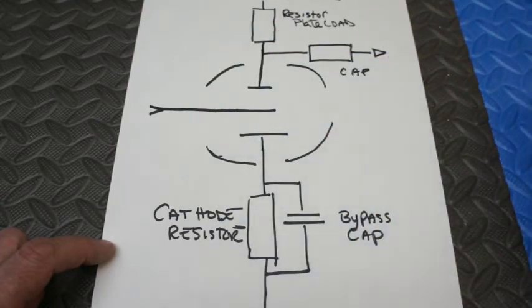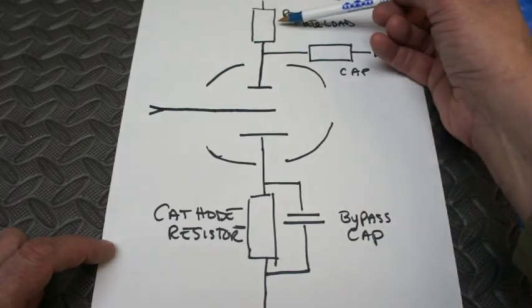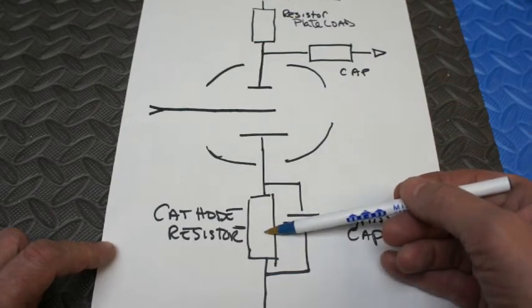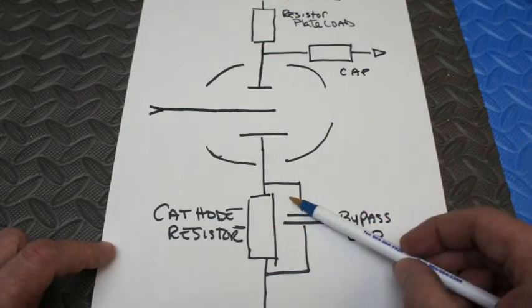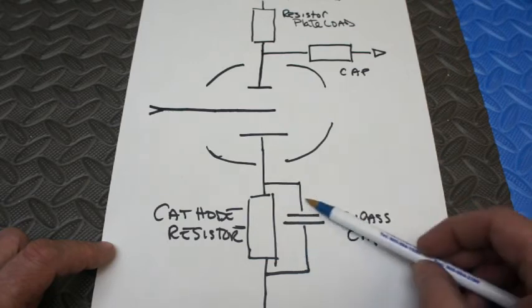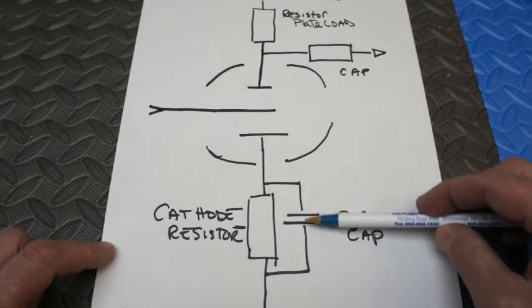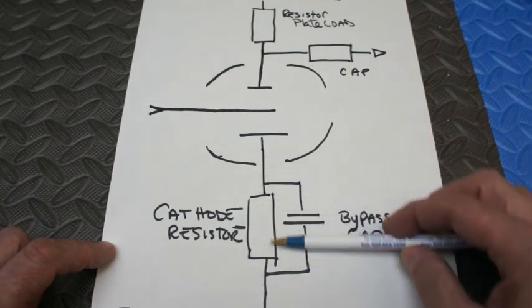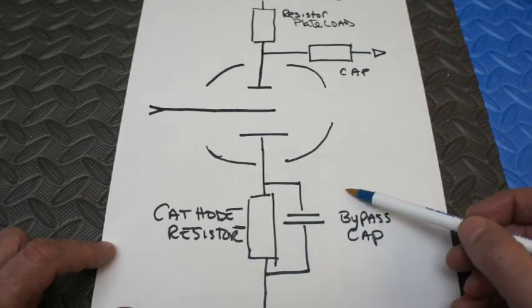So there are several tuning opportunities here. You could increase the value of the resistor to get more gain. You could decrease the value of the cathode resistor. The bypass cap, which is usually strapped over top of the cathode resistor, determines the EQ of that gain. And the smaller the cap, the more sharp it is.